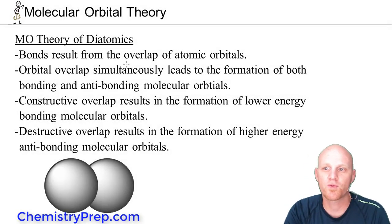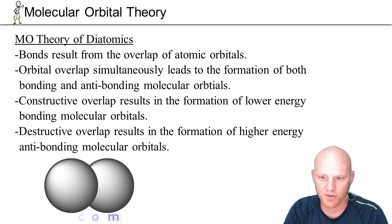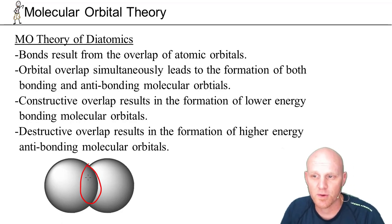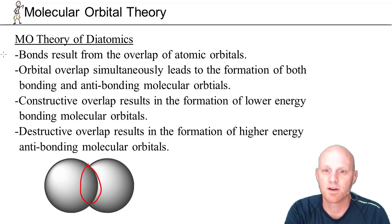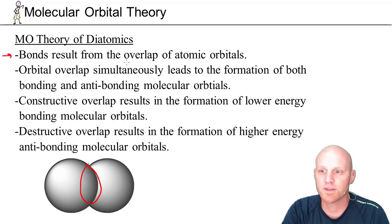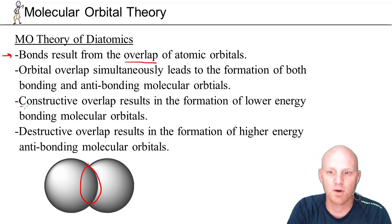Molecular orbital theory picks up right where valence bond theory lets off. If we look at a couple of s-orbitals, they overlap in this region. In valence bond theory, we only ever really consider constructive overlap — it's almost assumed and sometimes not even mentioned. But molecular orbital theory takes it a step further. Bonds still result from the overlap of atomic orbitals, agreeing with valence bond theory in that respect. However, that overlap can be both constructive as well as destructive.